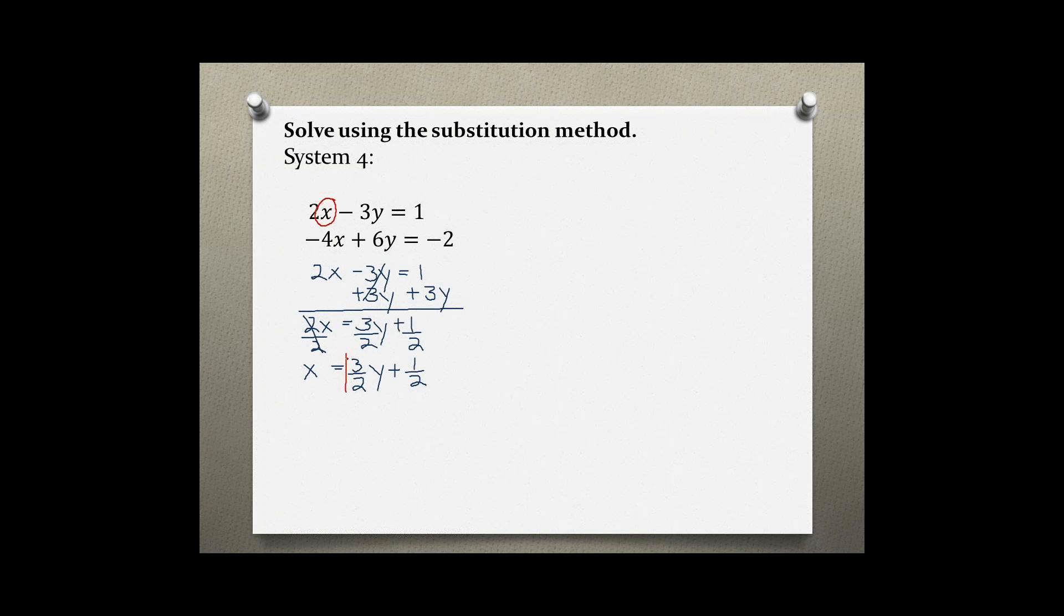Now I'm going to take this expression for x and plug it into the second equation for the x variable. Negative 4, open parentheses, 3 over 2y plus 1 half. This is what I substituted in for x.